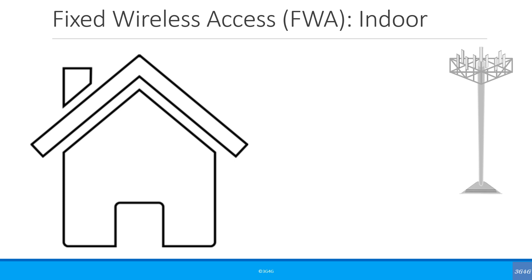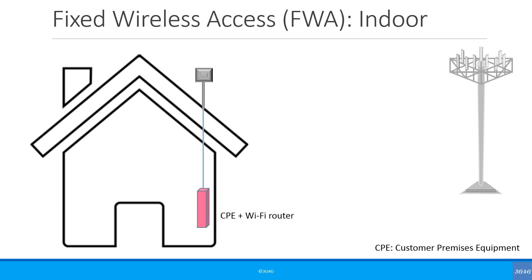Let's look at an example of fixed wireless access indoors. First, you will need an external high-gain antenna to get a reliable signal. To explain simply: if your smartphone is showing one bar outside your home, this external antenna will see it as three or four bars. This external antenna is connected to a CPE, or customer premises equipment. Different operators have different equipment. Some operators have a CPE that receives the mobile signal like a smartphone or MiFi, and also has an inbuilt Wi-Fi router.